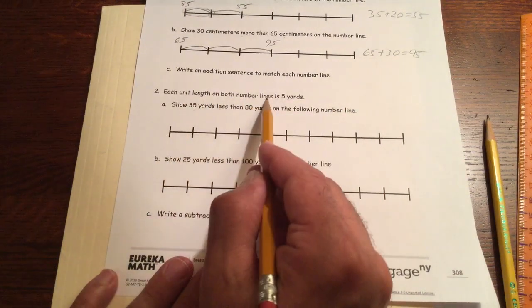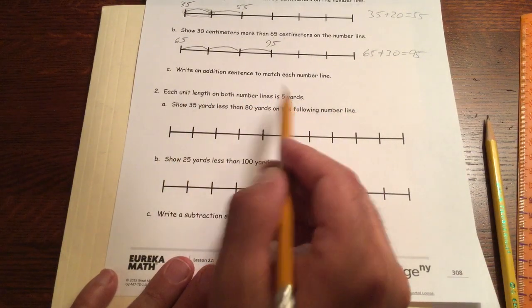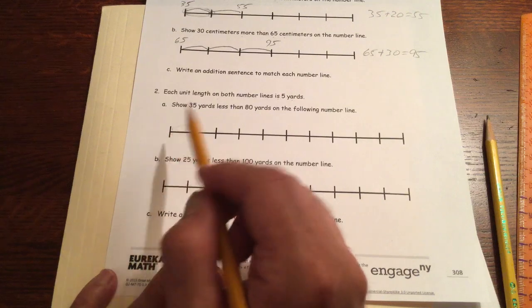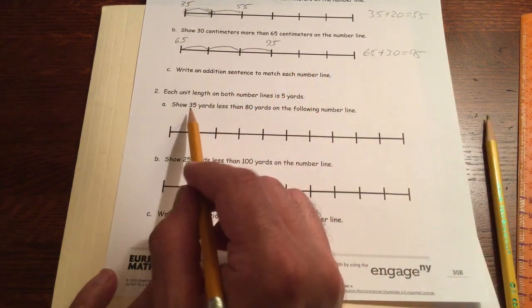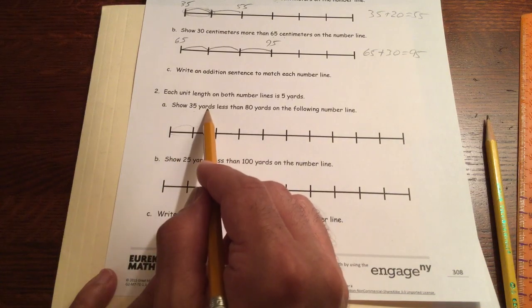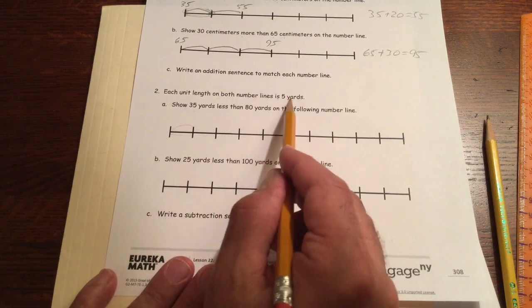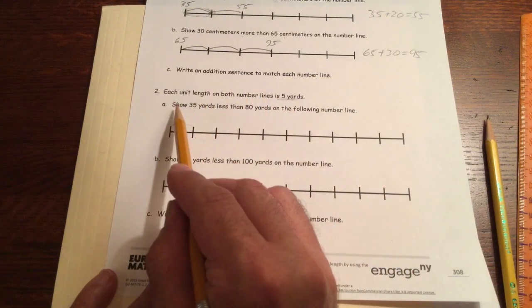This is 5 yards. Each unit length on both number lines is 5 yards. This obviously is not 5 yards, but we're going to call it 5 yards. Now we have 35 yards less. That means we're counting by fives.